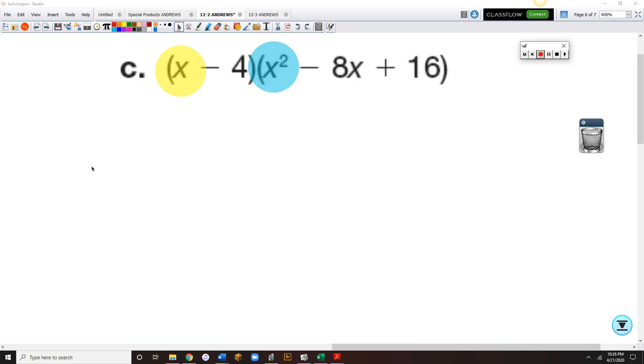Last one, guys. So x times x squared. We've got x cubed. Watching our signs. The main reason I'm doing one more example is just to make sure we're being very careful with signs. x times a minus 8x would be a minus 8x squared. And x times a plus 16 would be a plus 16x.